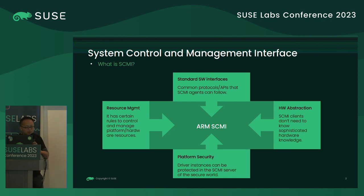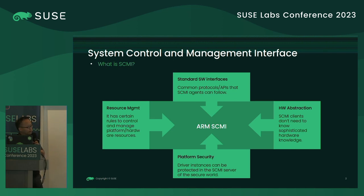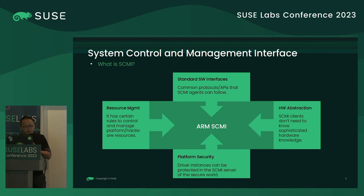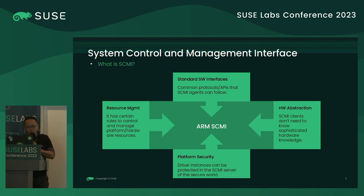For example, you can use SCMI to manage resources such as a clock, pin control, and a variety of hardware resources that SCMI can support. It also provides hardware abstractions, meaning agents don't have to know the details of how those hardware components work.